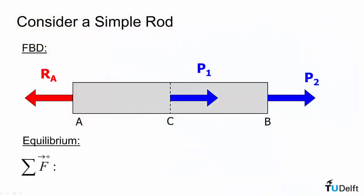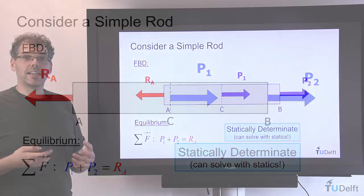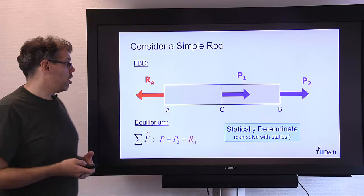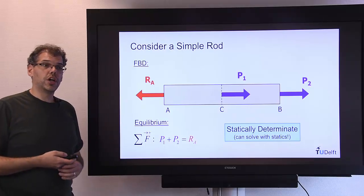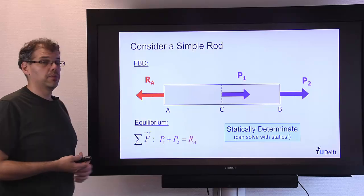If we then look at our second step it is to look at equilibrium and if we take sum of the forces in the horizontal direction we see that our reaction at A is equal to the sum of P1 and P2. We thus can say that this problem is statically determinate because we can solve for all of the reaction forces using the principles of statics alone, just using equilibrium.